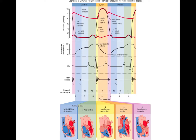This is the Wiggers Diagram, and although it looks pretty complicated, it's a pretty handy tool because it shows you each part of the cardiac cycle and how they line up with each other in any given time frame.